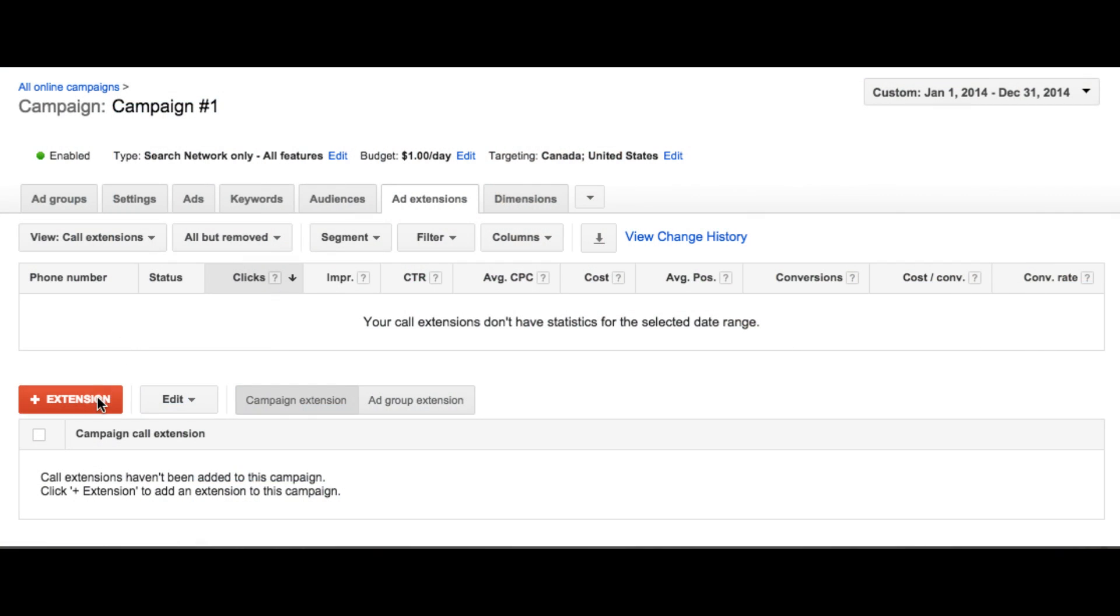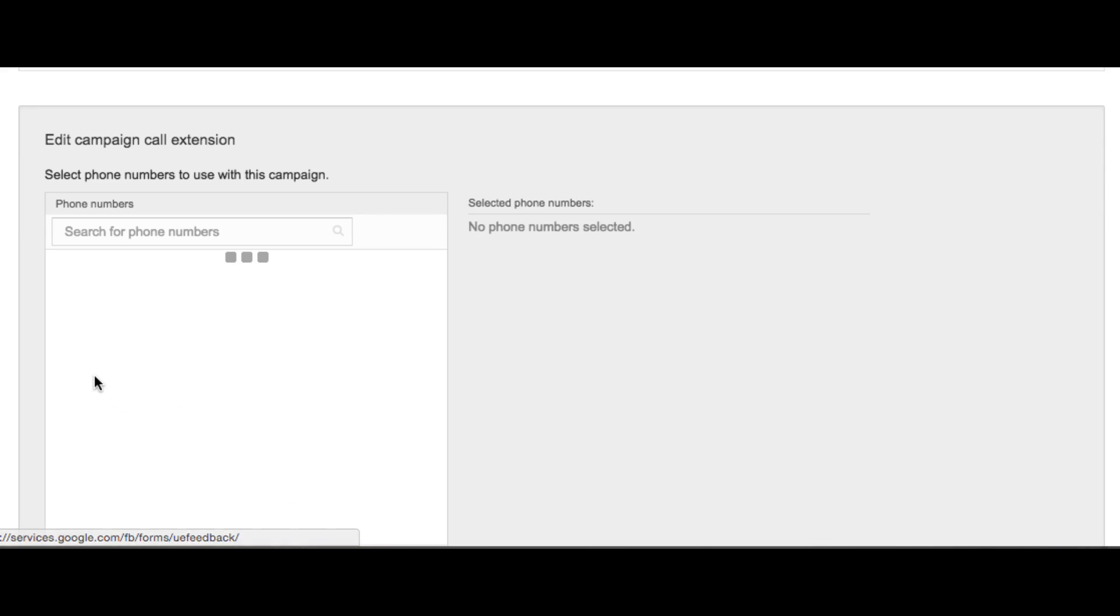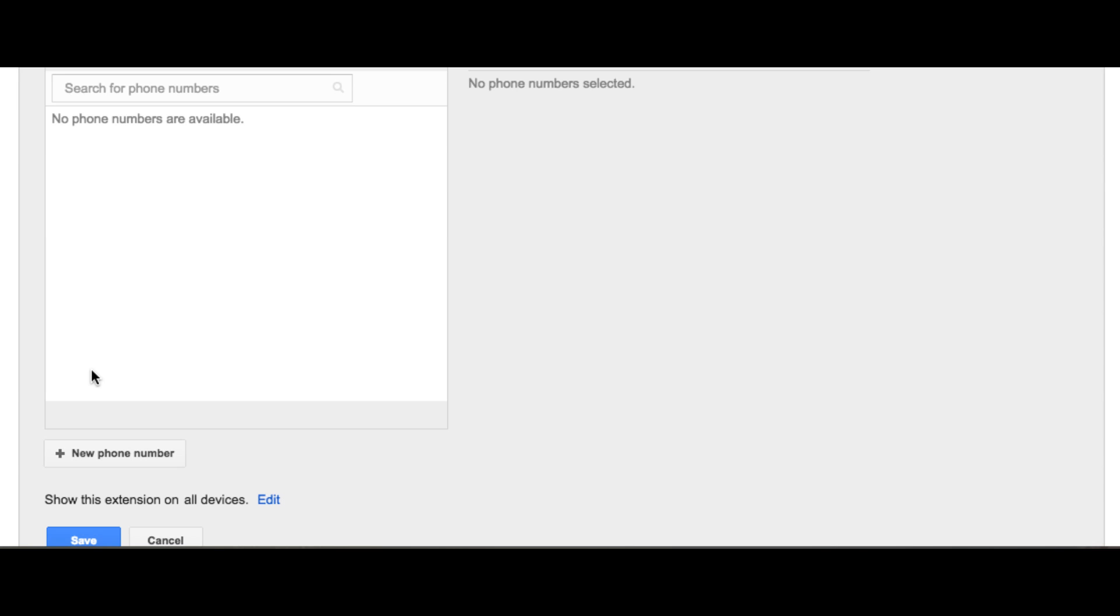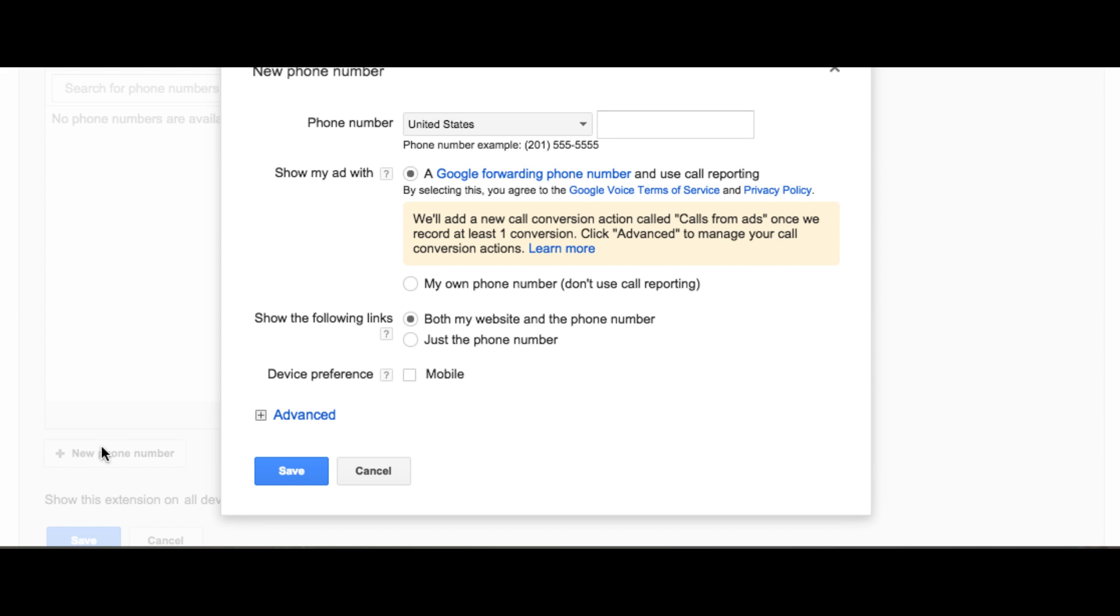Within AdWords, here's some options that you can take. Click the plus new extension button on the add extensions tab. You'll see a list of phone numbers that you've already set up. You can also choose any one of these or create a new one by clicking the gray plus new phone number button. Click save. You have a new phone number. You can apply it to your campaigns.